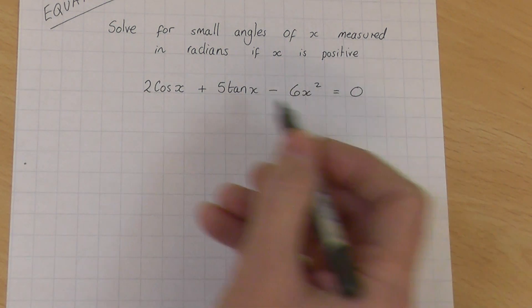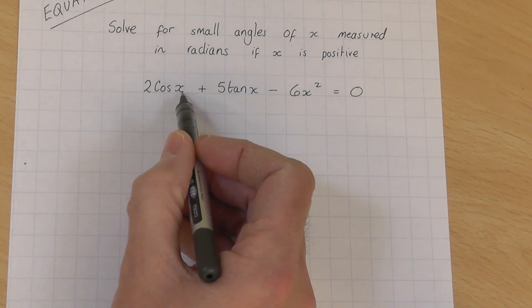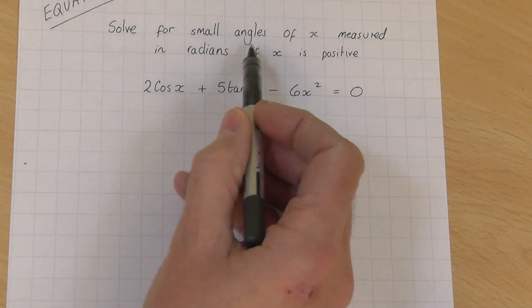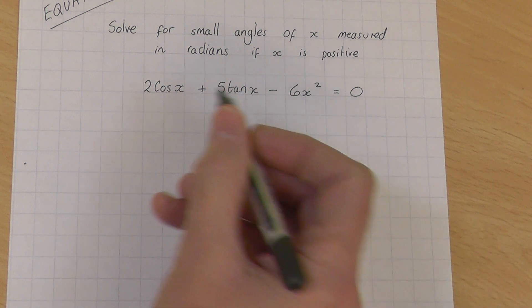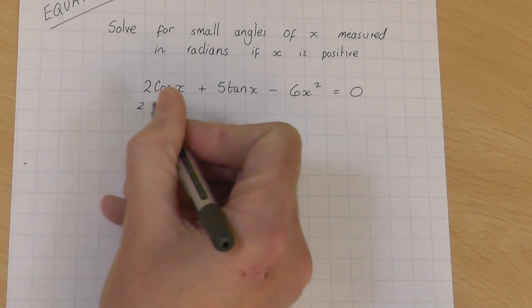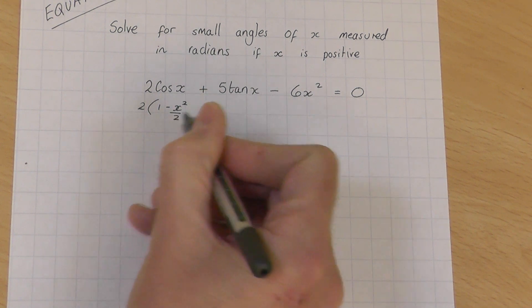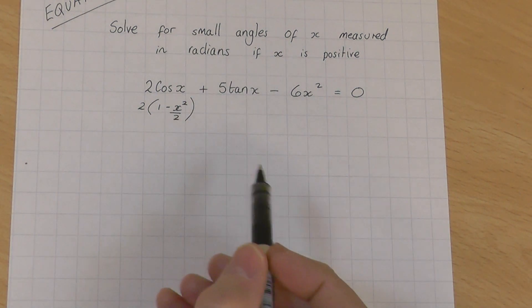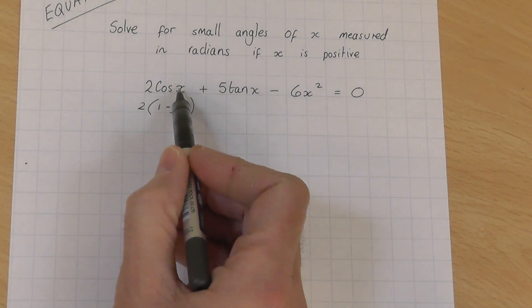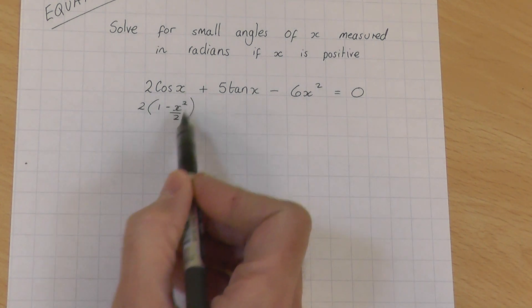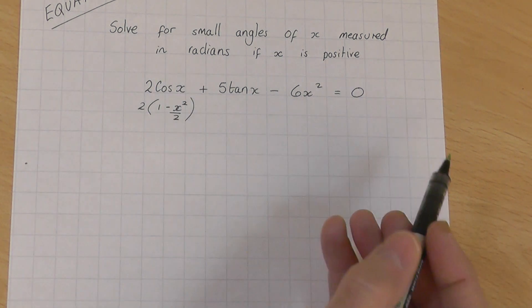So if 2cos x is now going to be replaced using our small angle value of x, if x is in radians, we've got 2 lots of 1 minus—instead of theta, which is what the general formula is, we've got x here—so this is x squared over 2. So 1 minus x squared over 2 is the same as cos x.